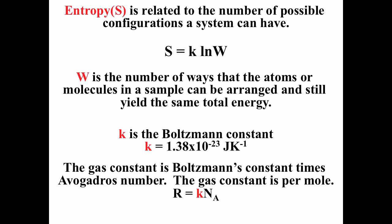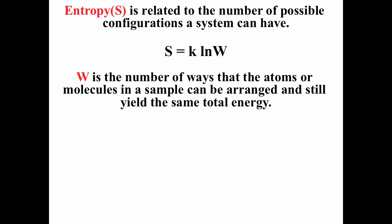You should notice that the gas constant R is equal to Boltzmann's constant k times Avogadro's number, 6.022 times 10 to the 23rd. So R equals k times Avogadro's number. Those constants are fairly fundamental.